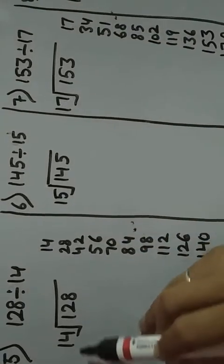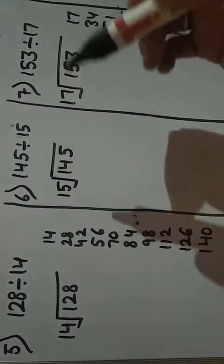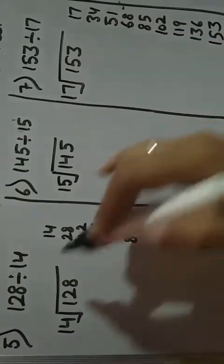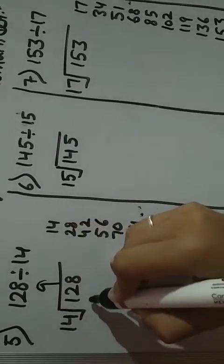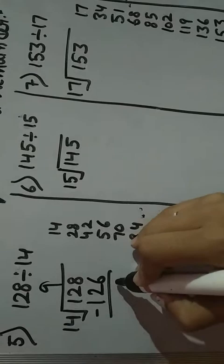So 14 for 3-digit number 128. Which number will come? 126. 14 times 9 is 126. 8 minus 6 is 2.